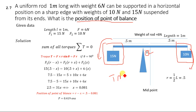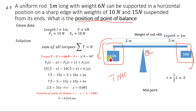We know that torque T is equal to r cross F — radius times force, which is the cross product between radius and force. This equals r·F·sin(θ). When θ is 90 degrees, sin(90) equals one, so we do not need to consider theta here because all forces are perpendicular to the rod.